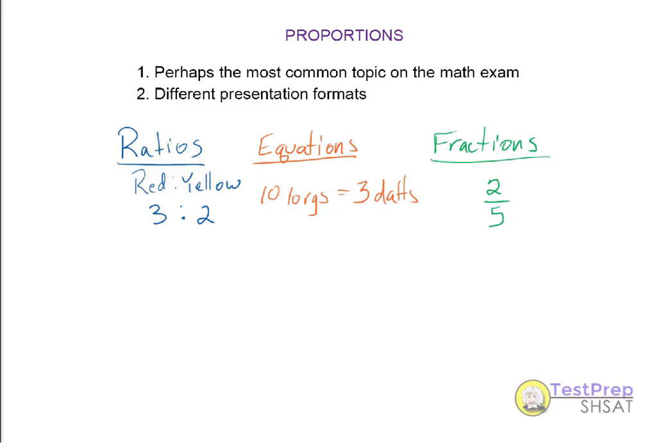You may not realize that proportions appear sometimes as ratios — red to yellow is 3 to 2 — or equations on a conversion problem, 10 lords equals 3 dalts, or maybe fractions in a probability problem where the probability of an event is 2 fifths, or an age word problem where John's age is 1 third of Zach's.